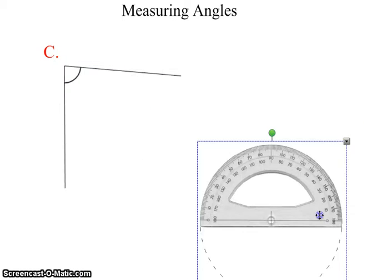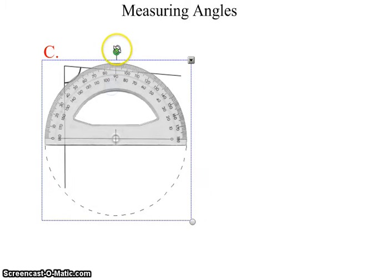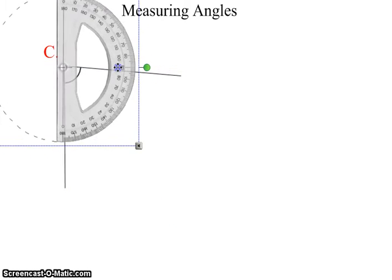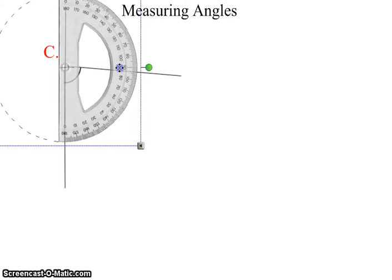For question C you can use either this ray as your straight edge side or the top ray as your straight edge side. For this particular demo I will use the side one. It doesn't matter if you use the other one you should get the same answer that I get here. So revealing what I have here we're going to use the inside set of numbers again and I'm going to go with approximately somewhere between 80 and 90. I'm going to say approximately 86 degrees for question C.